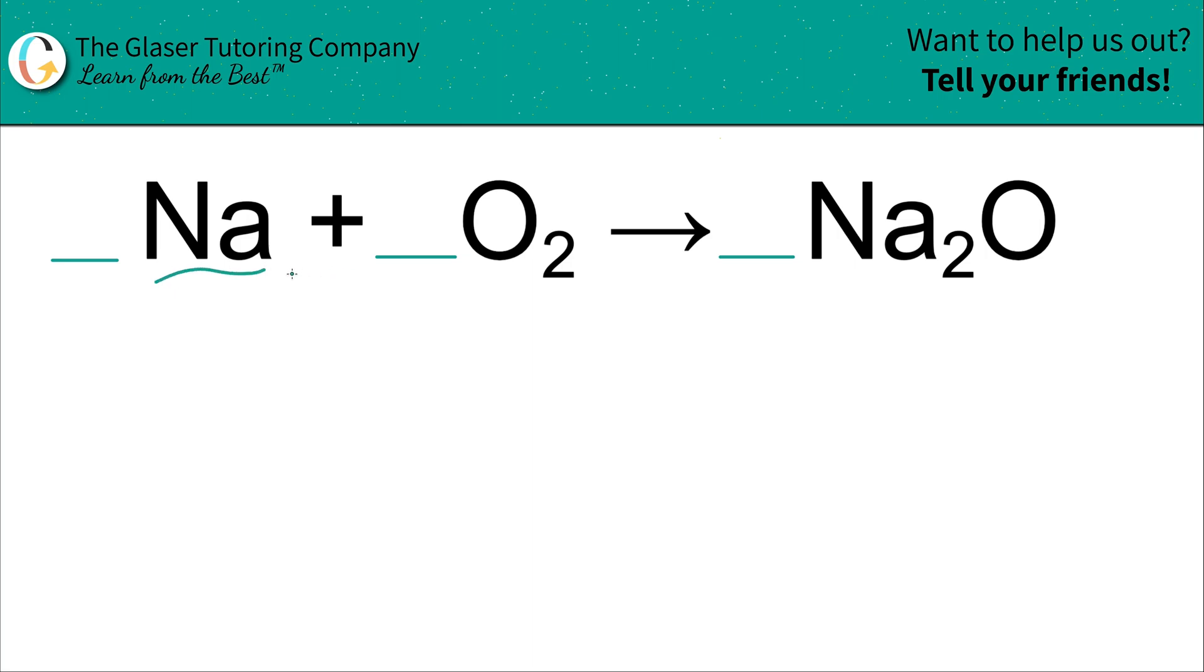Without further ado, just begin now with the first element you see. I don't really use a table method. I kind of just do this out as we go. So you have how many sodiums here on the left? Well, you have one. That's where the subscript comes into play. You got one sodium on the left, and on the right-hand side, you have two sodiums. That's not balanced. You always place in now the coefficient on the lower side. So you have to think to yourself, what number multiplied by one will give me a total of two? And obviously, that value is two.